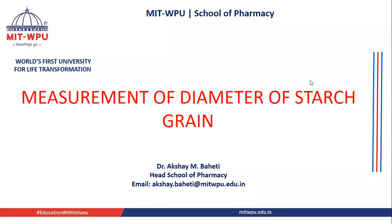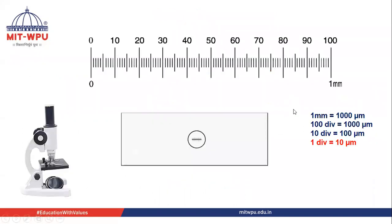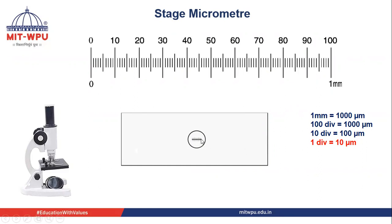The aim of today's practical is measurement of diameter of starch grain. For this, we need a stage micrometer. It's a glass slide where we can see a circle and a scale is placed in between.